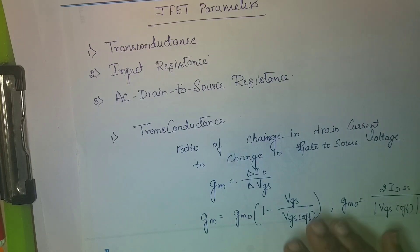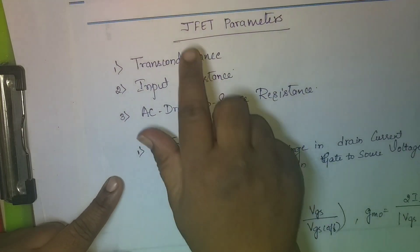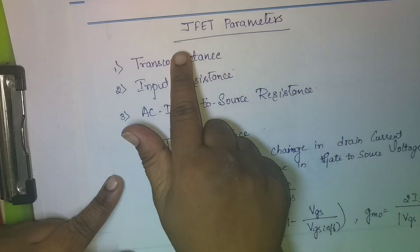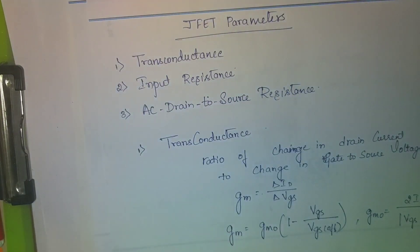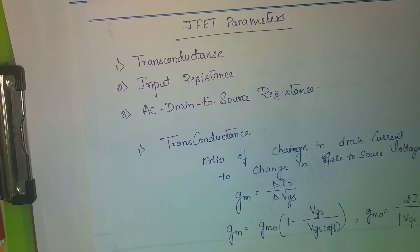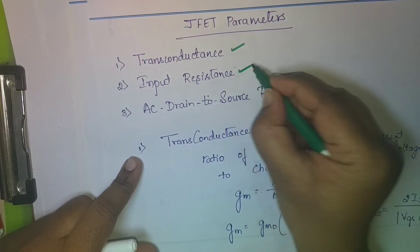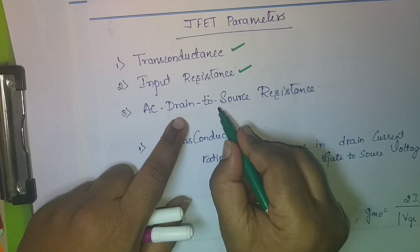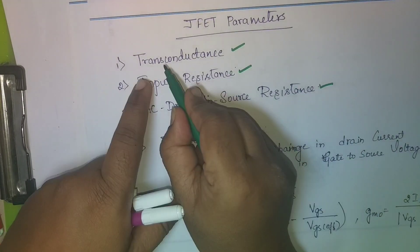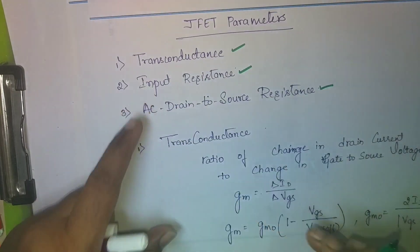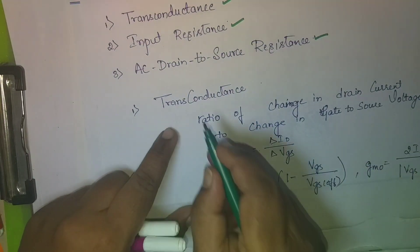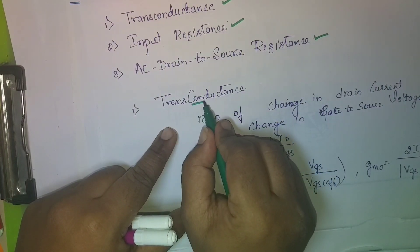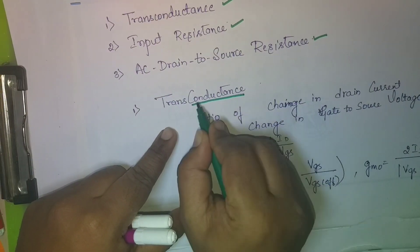Next we have a very simple topic which is JFET parameters. There are three different parameters to study: the first one is transconductance, next is input resistance, and the next is AC drain-to-source resistance. What is transconductance? As the name suggests, it is a conductance.